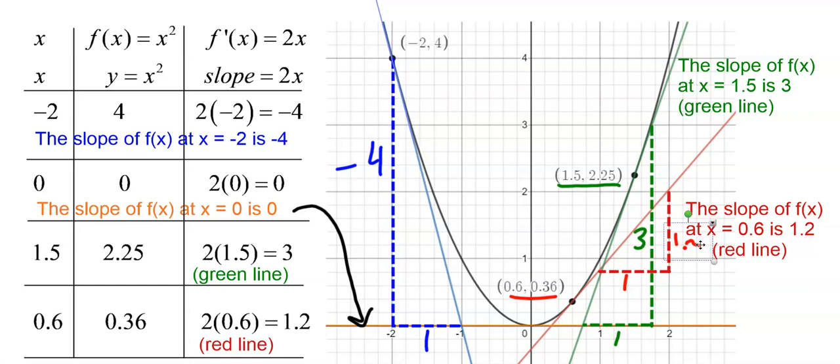So it's 1.2 right there. So what this derivative function, f prime of x equals 2x, tells us is that everywhere on this parabola, the slope of the tangent line is always 2 times whatever the x value is. And that's true for every point. I just did 4 points as an example just to show you. But every point on the parabola has that characteristic.